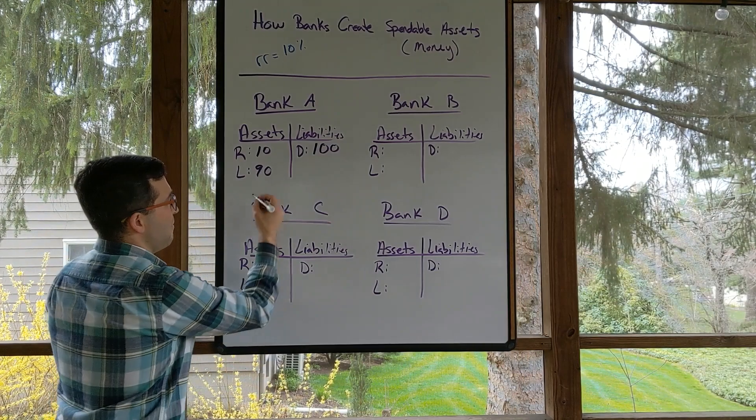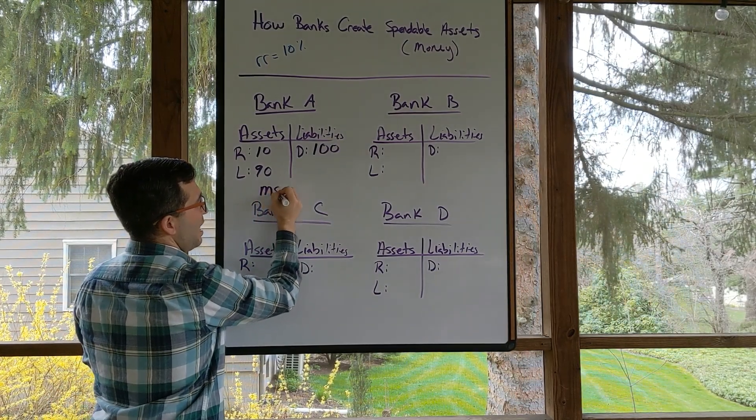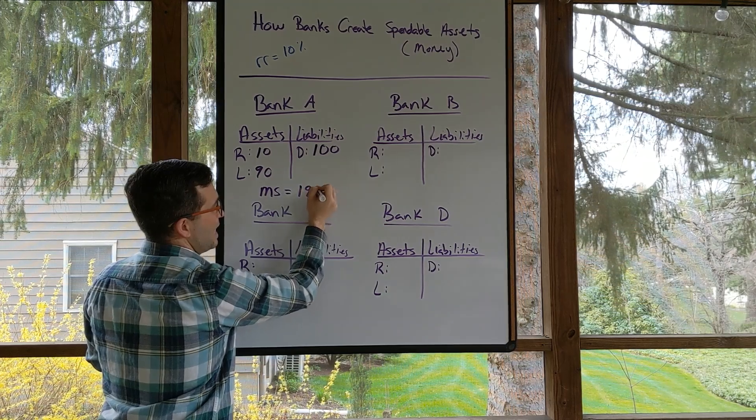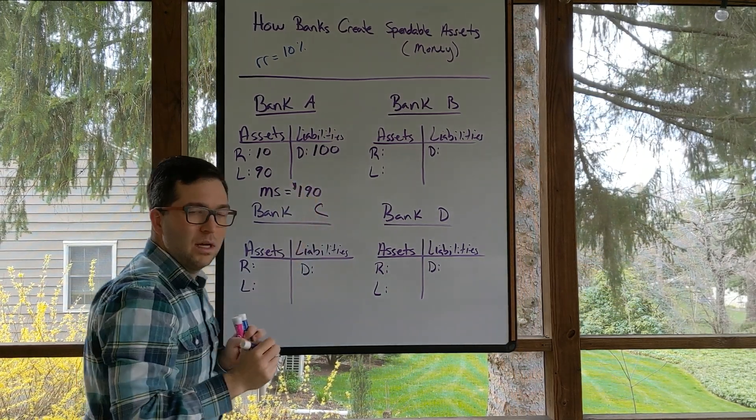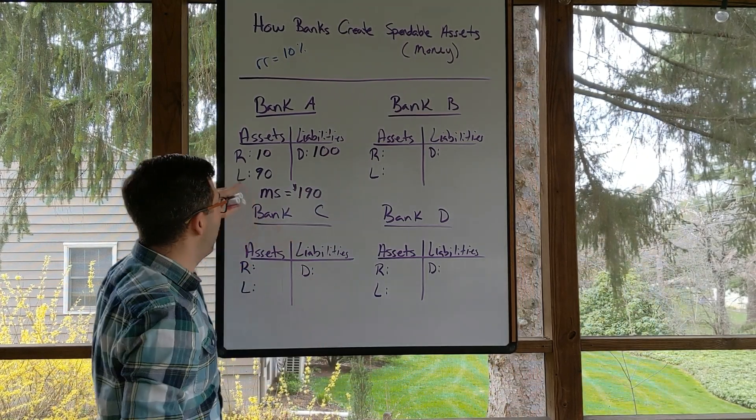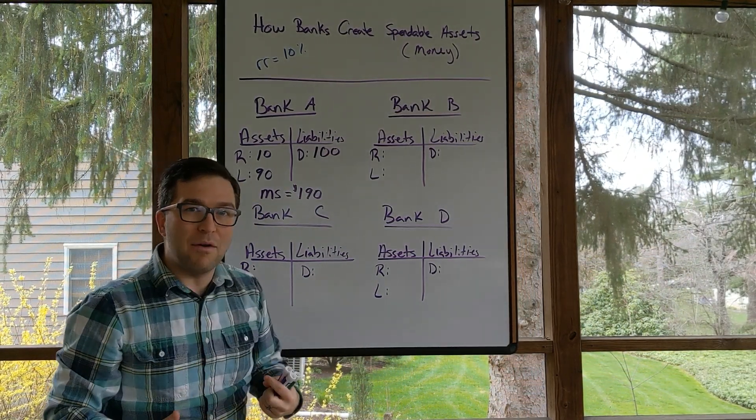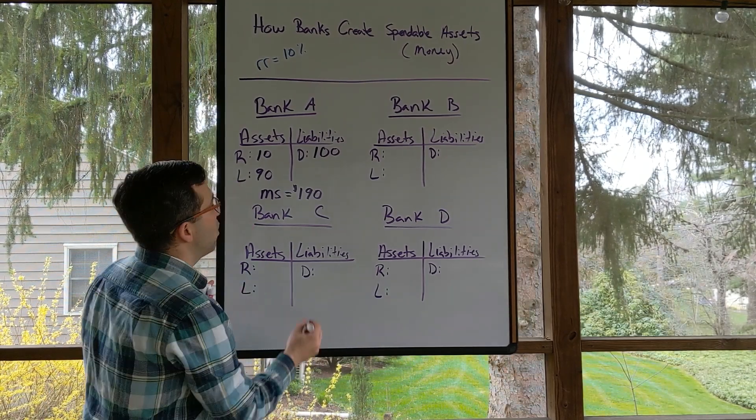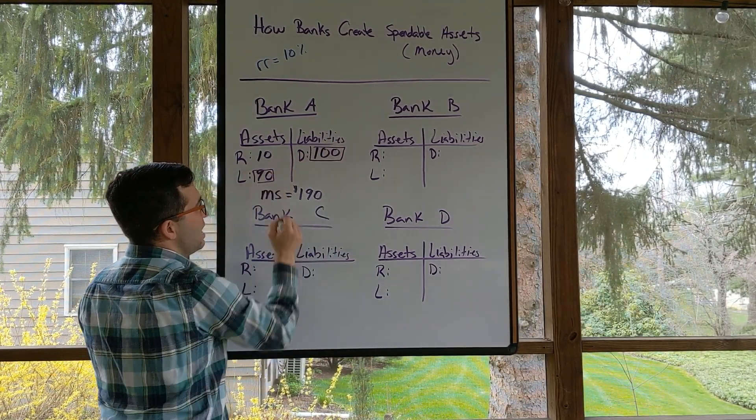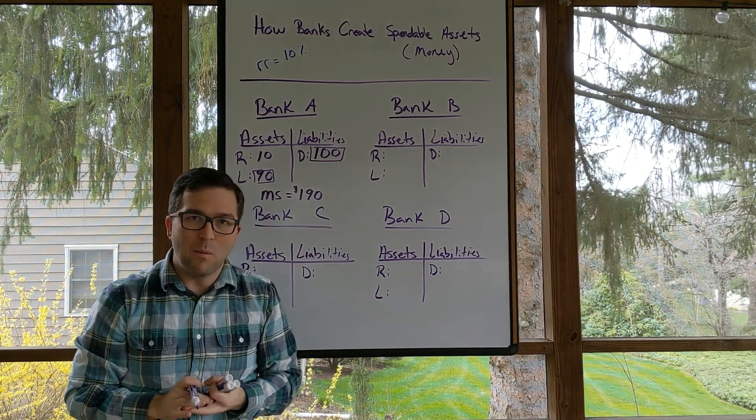Well, at this point in time, money supply is going to equal $190 because I could spend out of my deposits and the person who got that loan could spend out of that money. So we have $100 plus the $90 is going to get us to that $190.